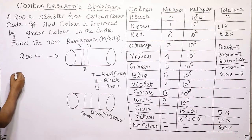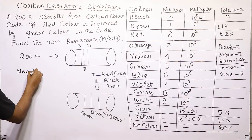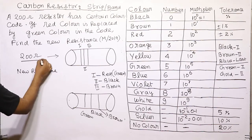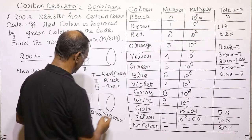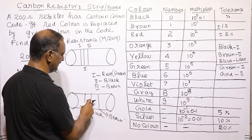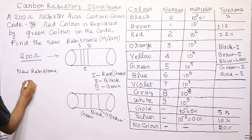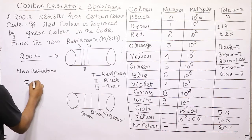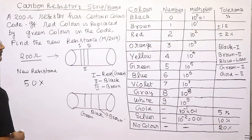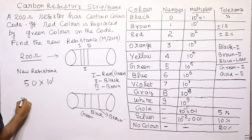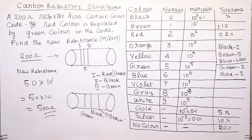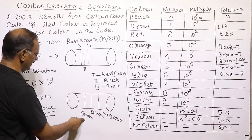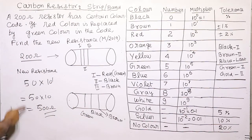With the first band replaced by green, green stands for the digit 5. The second band, black, is 0. The multiplier, brown, is 10 to the power 1. So the new resistance is 50 into 10, which equals 500 ohm. The resistor value changes from 200 ohm to 500 ohm.